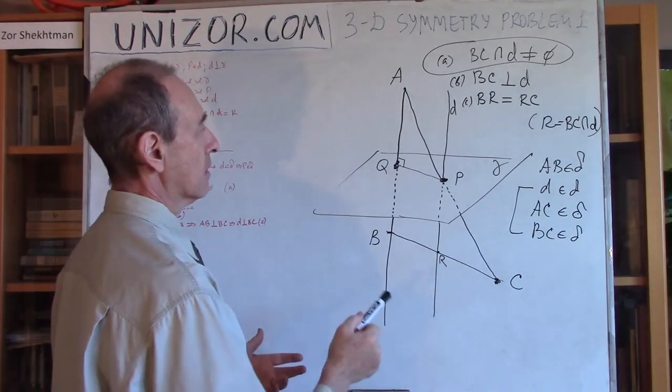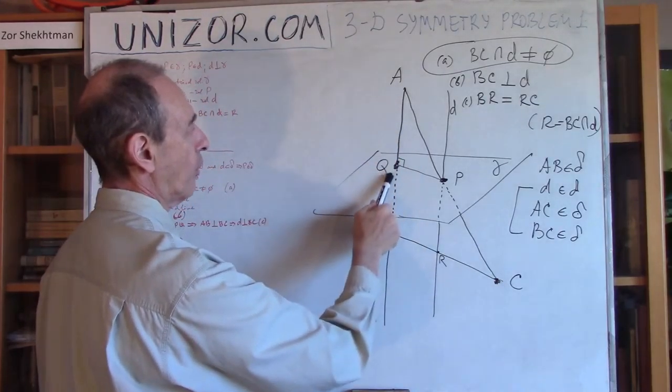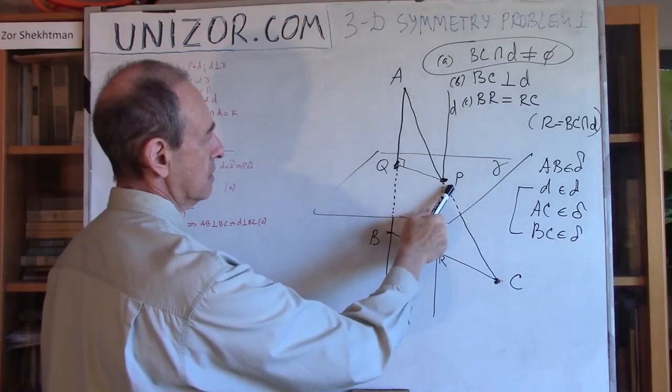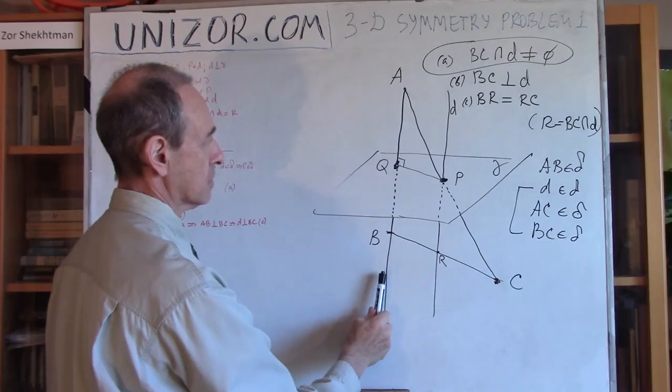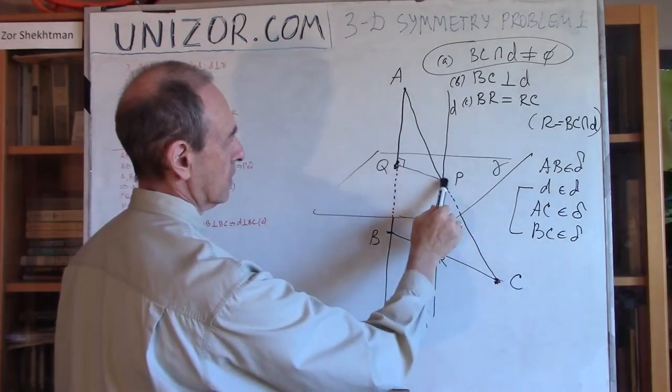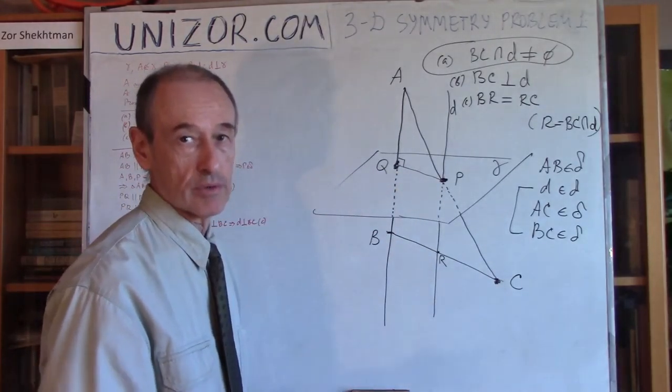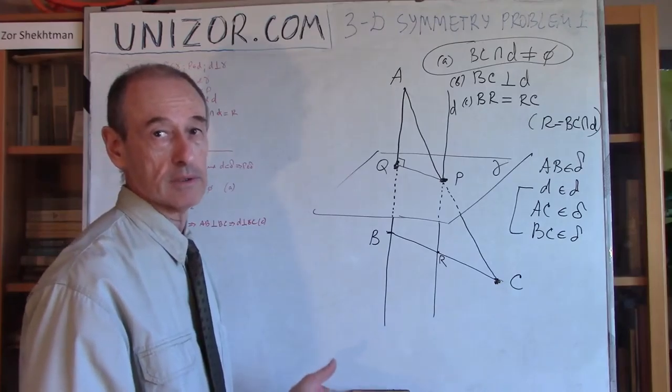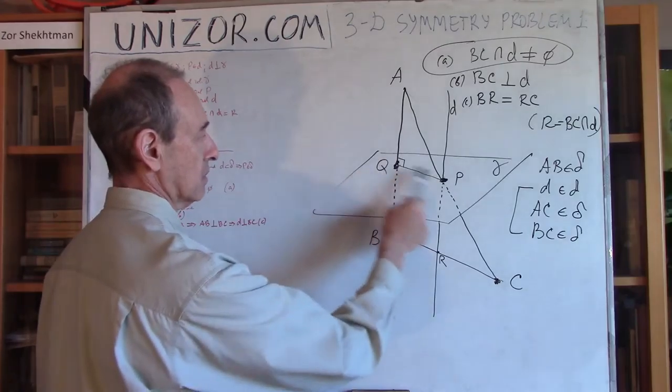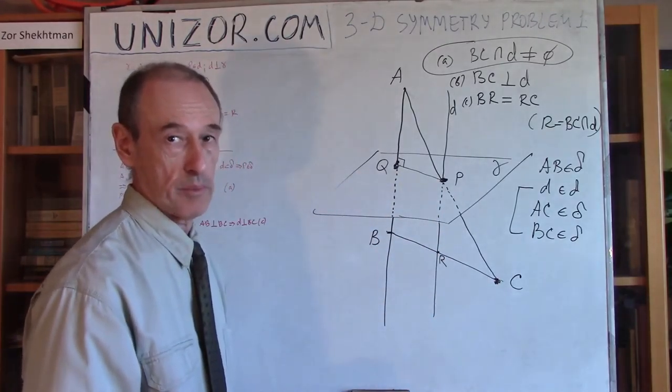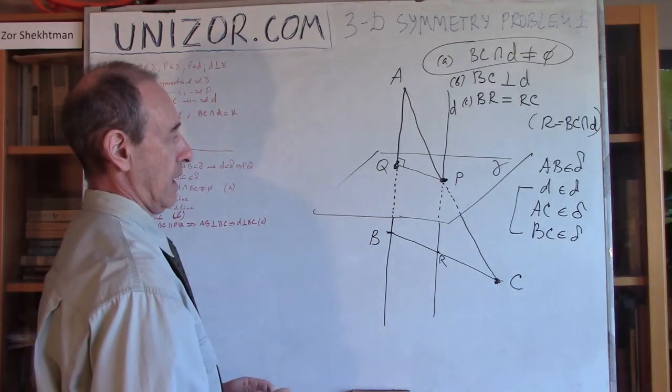Now let's consider triangle ABC. Q is the midpoint of AB, and P is the midpoint of AC, because this is the reflection relative to plane gamma, and this is reflection relative to point P. So PQ is a midline of the triangle. And we know the properties of the midline of a triangle - not only is it equal to half of the opposite side, but it's also parallel to the opposite side. So PQ is parallel to BC and equal to half of it.